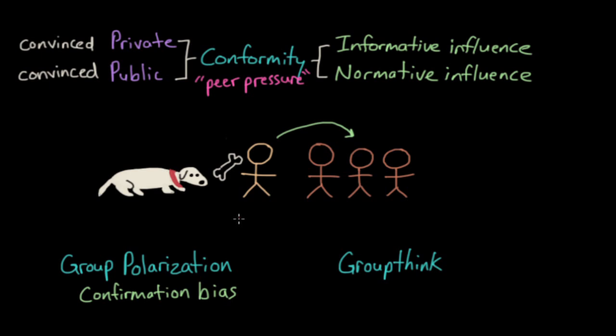Thinking back to our example, if you privately conformed to use a shock collar, you would leave the group situation with a genuine belief that the best way to train a dog is with a shock collar. In other words, you could say you were convinced. On the other hand, if you publicly conformed, then you would agree to the shock collar while in the group situation, but you would also know that treats are the more effective route. When you're alone or out of the group situation, you would continue to train dogs with treats. You could say that you weren't convinced.